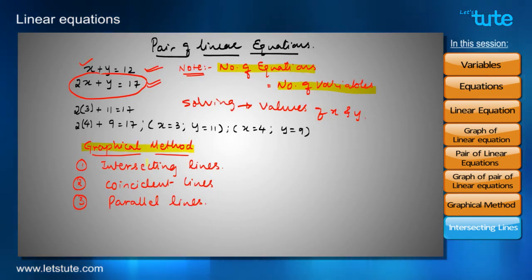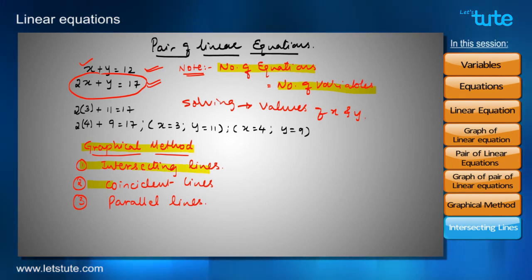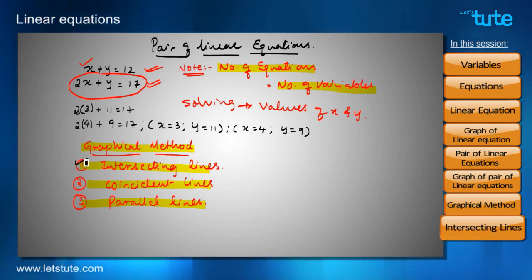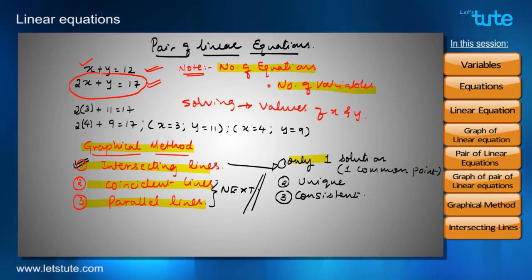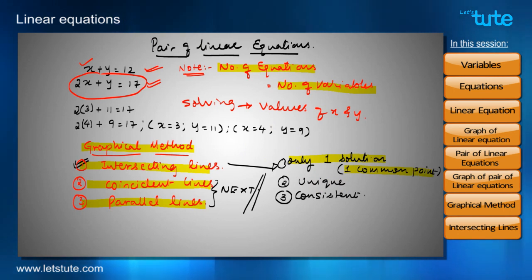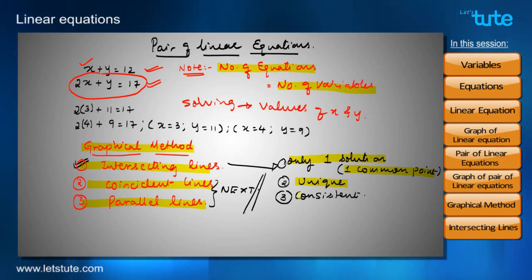In the graphical method, we get three types of questions: questions for intersecting lines, questions for coincident lines, and questions for parallel lines. The mango-apple problem was of the intersecting lines type. The coincident and parallel line cases will be covered in the next session. For intersecting lines, we always get only one unique solution — the point of intersection, also called the common point. Linear equations that have a solution are called consistent linear equations.